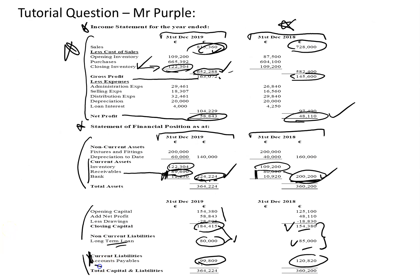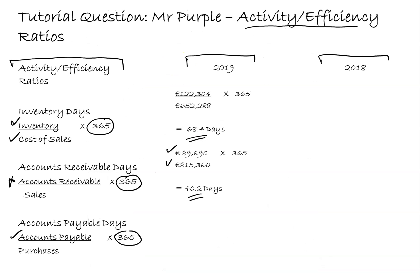For accounts payable days, accounts payable is a current liability. Current liabilities show accounts payable of 99,809. The purchases figure from the income statement is 665,392. So 99,809 divided by 665,392 multiplied by 365 gives 54.8 days, meaning we are paying our suppliers on average in about 54.8 or 55 days.